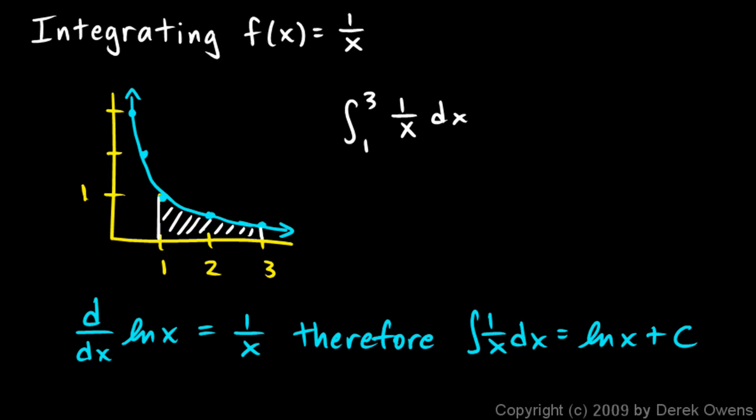So that would allow us to solve this problem. The integral from 1 to 3 of 1 over x dx would equal the natural log of x evaluated from 1 to 3. And that would just be the natural log of 3 minus the natural log of 1. And the natural log of 1, you probably recall, is 0. So this is just the natural log of 3.